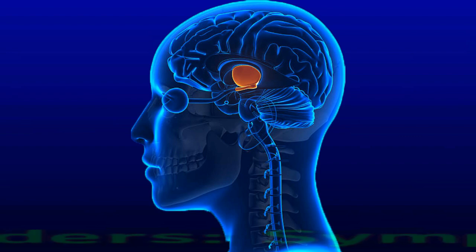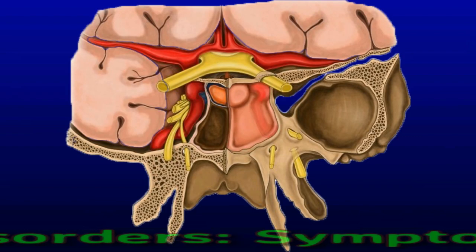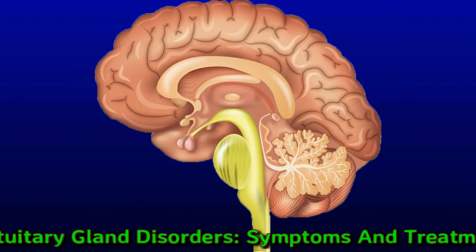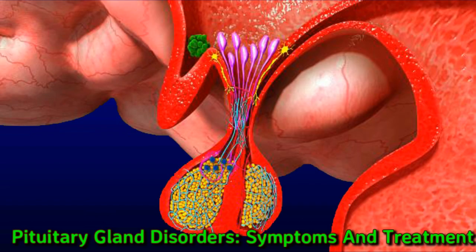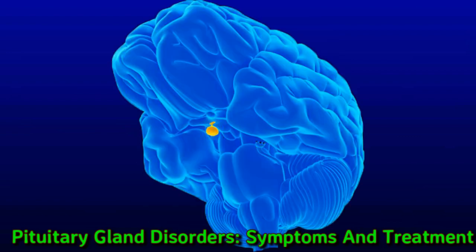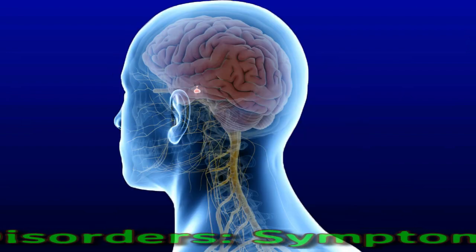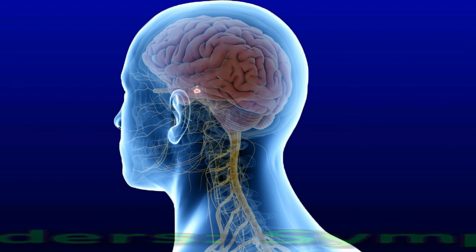Pituitary Gland Disorders — Symptoms and Treatment. Pituitary Gland Disorders occur when the pituitary gland produces too little or too much of certain hormones. Some examples are Cushing's Disease, Empty Sella Syndrome, and Acromegaly. Pituitary Gland Disorders can affect bodily functions such as growth and development, sexual function, and adrenal function. This video examines Pituitary Gland Disorders, their symptoms, and treatments.